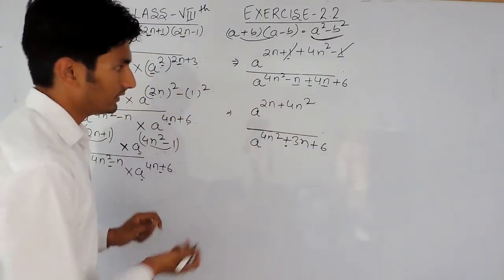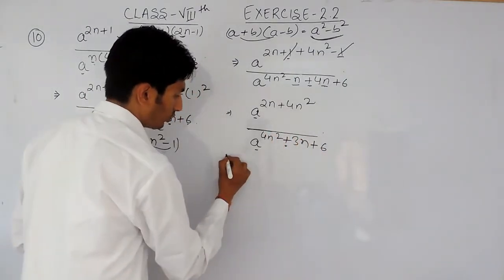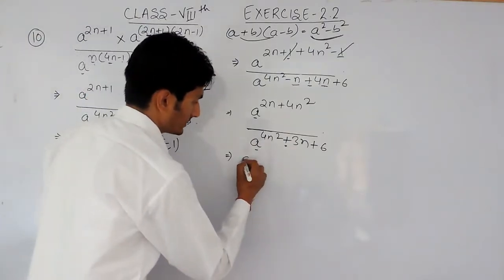Now again, here the base is same, and here these are divided, so obviously the power should be subtracted here. So this is a, 2n plus 4n square.